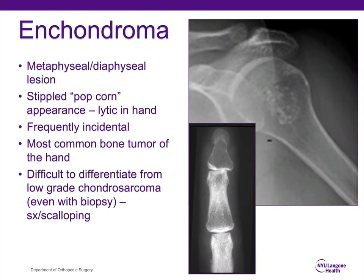Enchondroma is another common bone lesion which is benign and typically latent. It does have a very different appearance in long bones as opposed to the hand. This is typically a metaphyseal lesion, can extend sometimes to the diaphysis. It has in long bones a popcorn-like appearance, whereas it's lytic in the hand. It's important to understand that the enchondroma is the most common bone tumor of the hand. In long bones, it's very difficult to differentiate from a low-grade chondrosarcoma.